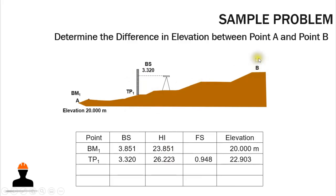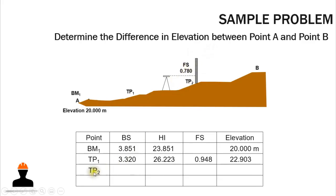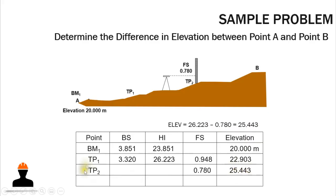If point B is still not visible, we set Turning Point 2. We move the stadia rod there and record a foresight reading of 0.780 m. Elevation of TP2 = 26.223 − 0.780 = 25.443 m. We record this in the turning point 2 row.